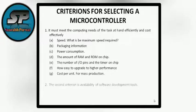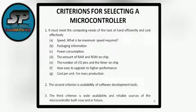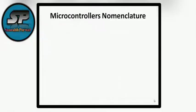The second criterion is the availability of software development tools — how easily compilers, simulators, emulators, debuggers, and assemblers are available to write and develop code for that microcontroller. The last criterion is the wide availability and reliable sources of the microcontroller, both now and in the future.